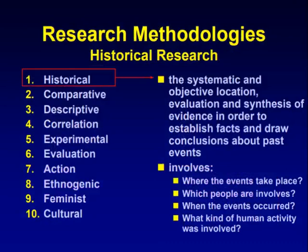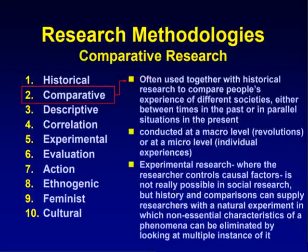In historical research methodology, the systematic and objective location, evaluation, and synthesis of evidence in order to establish facts and draw conclusions about past events involves: where the events take place, which people are involved, when the events occurred, and what kind of human activity was involved.